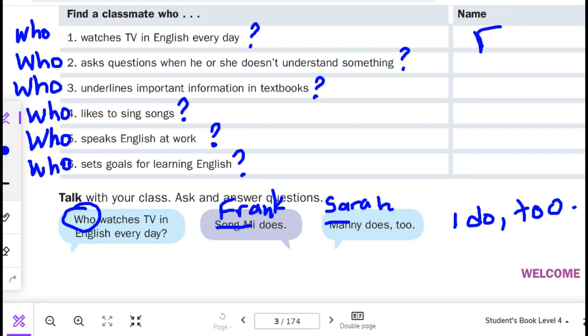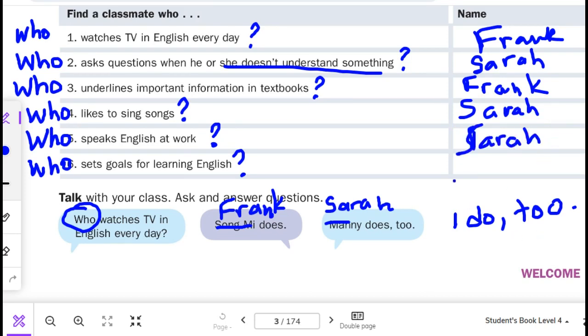So I would add: Frank watches TV every day. Sarah asks questions when she doesn't understand something. Frank underlines important information in textbooks. Sarah likes to sing songs. Sarah speaks English at work. And Frank sets goals for learning English.